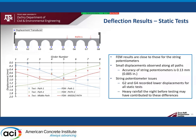The deflections obtained from the string potentiometers, shown as data points in the plot, were in close agreement with the FEM results presented by solid lines. It should be noted that the displacements obtained were small along all paths. Hence, the difference between the FEM value and the corresponding measurement value may be close to the accuracy limit of the string potentiometers. Heavy rainfall the night before testing may have affected the displacements recorded by string potentiometers installed at girders 2 and 4.